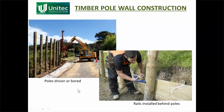The poles are either driven or bored. The picture shown previously was bored with concrete backfill, or they can be driven into the ground using a pole driver. Once that's done, you install the rails in behind by nailing them on — the trick being that you need to be able to swing a hammer or get a nail gun in behind the wall to make the nail connection.